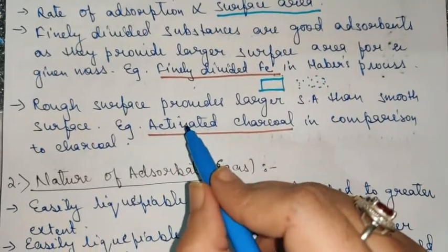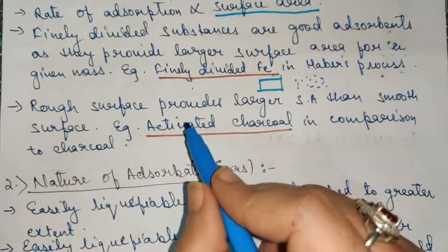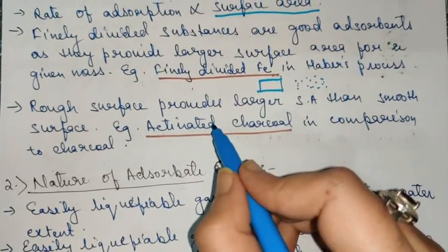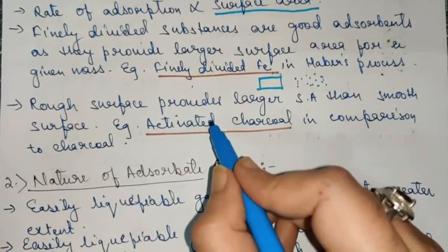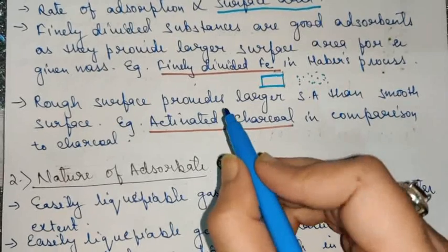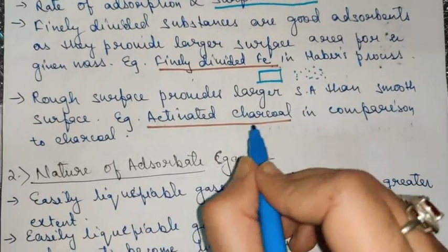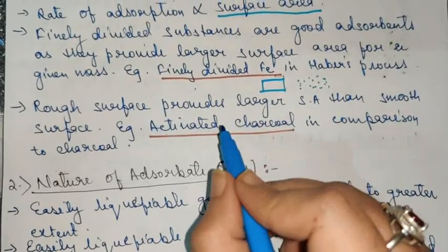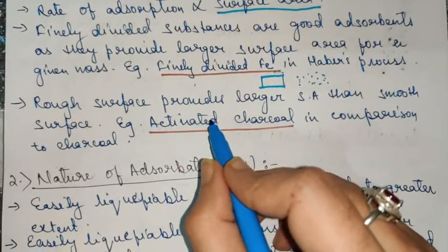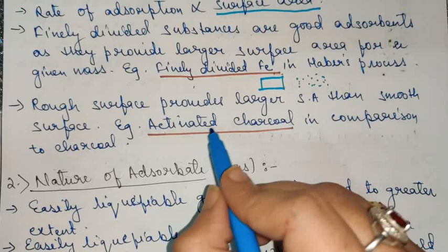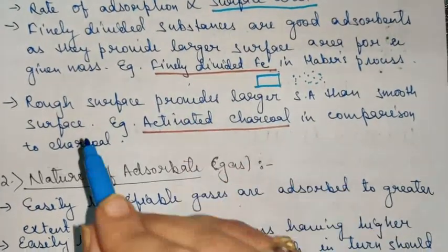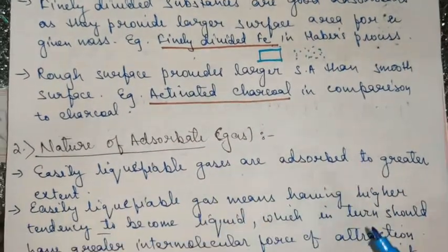Face masks are also made of activated charcoal, and it is very common these days. The purpose of using activated charcoal is that it acts as an adsorbent — it adsorbs impurities from the face surface. Activated charcoal is rough in nature, that is why it is preferred over normal charcoal.